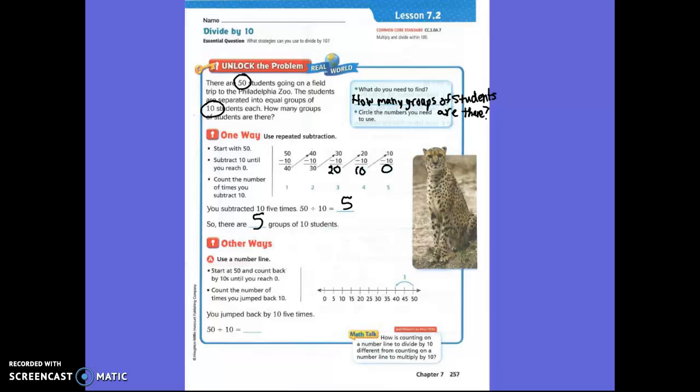Another way that we could have found this exact same answer is by using a number line. And you're still subtracting. Remember we talked about this on our test? These two ways are alike because you are subtracting. The only difference is you don't actually go minus, you actually jump backwards, which is subtracting. So you have to start at fifty and jump backwards ten, which would be? Forty.